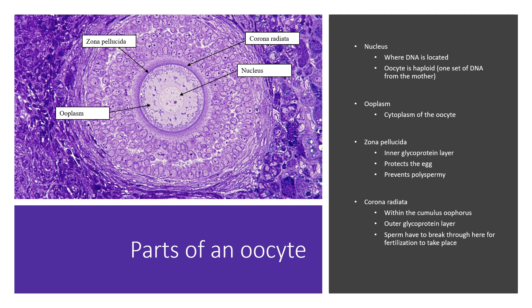You have the inner glycoprotein layer, which is the zona pellucida, that protects the egg and also prevents polyspermy. If you watch my video on embryonic development, I quickly go into fertilization and talk about the functional role of the zona pellucida. You also have the corona radiata, which is the outermost glycoprotein layer within what's called the cumulus oophorus. Sperm have to break through the corona radiata and interact with the zona pellucida in order for fertilization to take place.